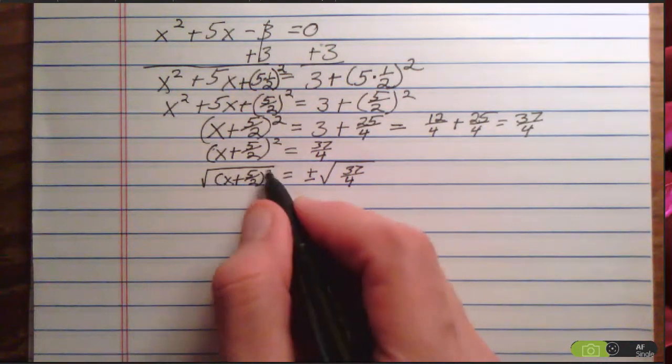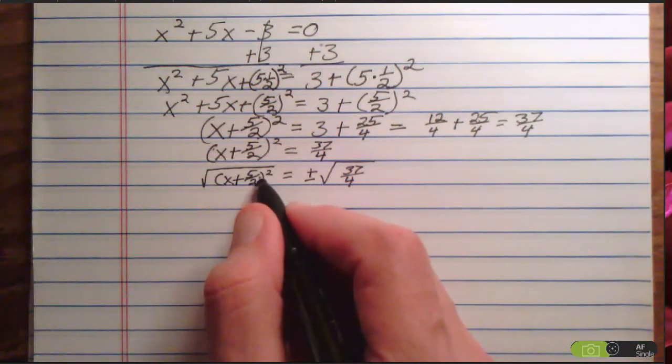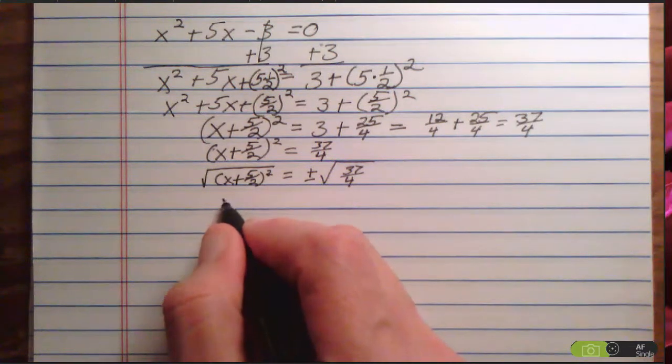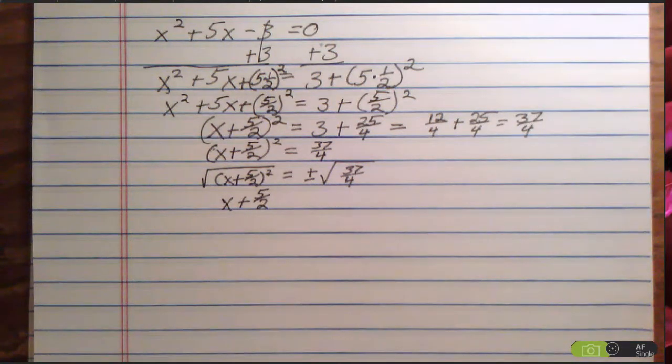The square root of (x + 5/2)² gives me x + 5/2. It's liberated from the square root and from the square, because the square root and the square are inverse operations. They cancel each other out.